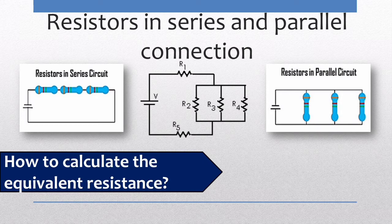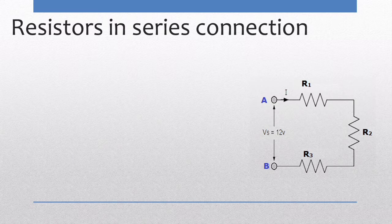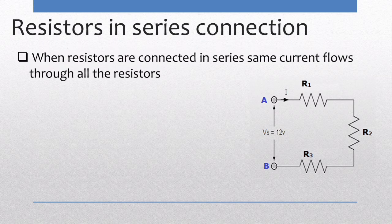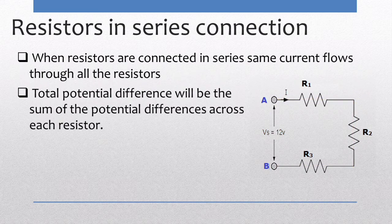In a series connection, resistances are connected end to end. In this figure there are three resistances R1, R2, and R3 connected in series. As there is only a single path for the current to flow, the same current flows through all the resistors. In a series combination, the total potential difference across the combination equals the sum of the potential differences across the individual resistors.